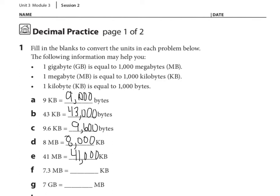Megabytes to kilobytes again for the next one. If I know that 8 megabytes is 8,000 kilobytes, how many kilobytes is 7 megabytes? That's right, 7,000. And then the 3 tenths megabytes is 300, so the answer here is 7,300.